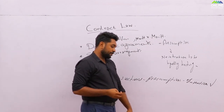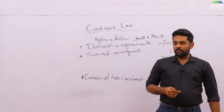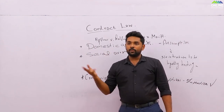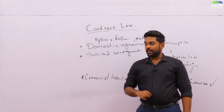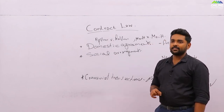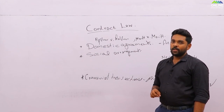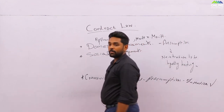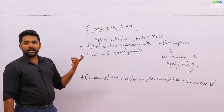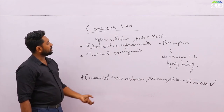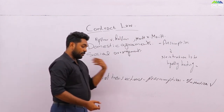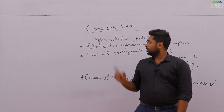For example, the husband went abroad and agreed to send his wife a definite amount of money every month. Later they quarreled and he stopped sending money. The wife filed an action saying her husband agreed to send money but is not doing so. The court held that since they are husband and wife, their agreement is a domestic agreement and therefore not legally enforceable, so she cannot force him to send money.